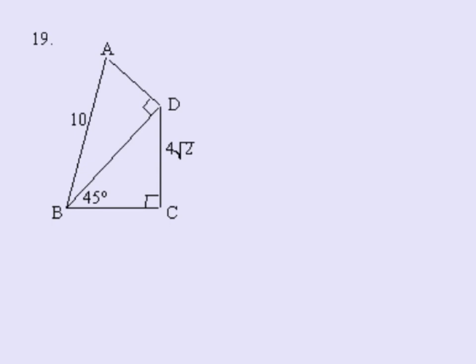Number 19 is a similar problem to number 18. We're going to start off looking at this triangle BDC. Right away we see it is a 45-45-90 triangle. So that means if CD is 4 root 2, then BC is also 4 root 2.